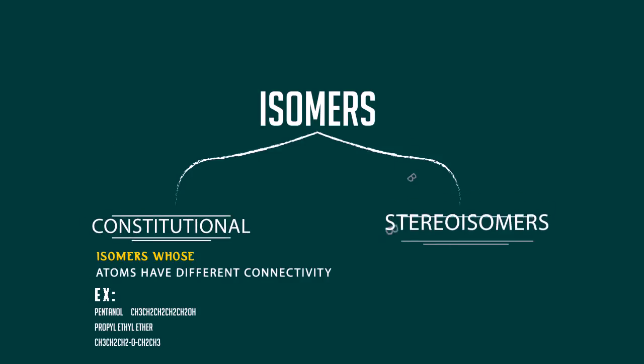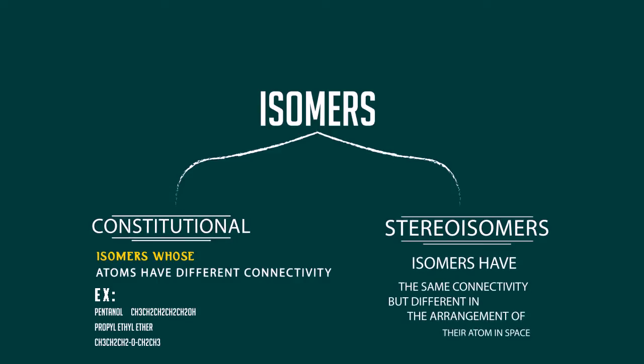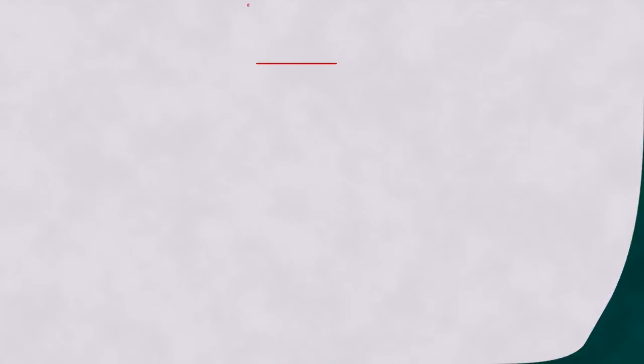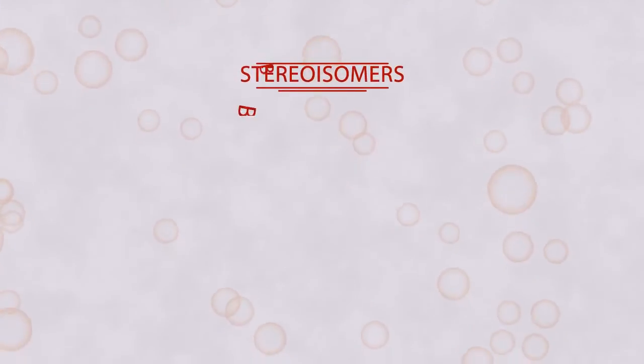The second type, stereoisomers. Isomers have the same connectivity but different arrangement of their atoms in space. Stereoisomers have two types.